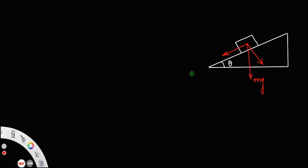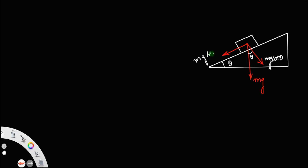If this angle is theta, then this angle will also be theta. So if this is mg, the component along the plane will be mg sin theta and the component perpendicular to the plane will be mg cos theta. Thus the weight is resolved into two perpendicular components.